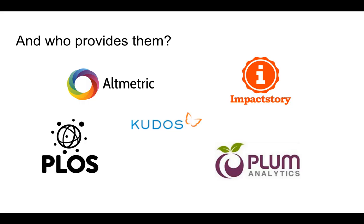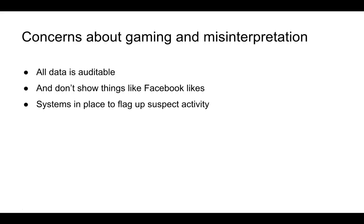There are lots of other altmetric companies out there. Going back to altmetric.com: they make all their data auditable. They don't show things like Facebook likes as too simple, but will monitor Facebook shares, and they have systems in place to try and flag suspect activity. We have to be honest about the fact that some academics are not honest — they will plagiarise, self-cite, republish the same research, submit others' research as their own, or peer review their own research under a false identity. Altmetrics is just as susceptible, but they do have systems to try and prevent this.